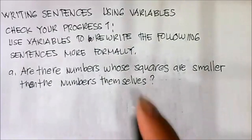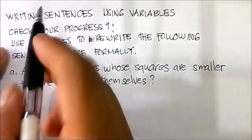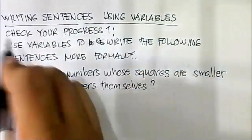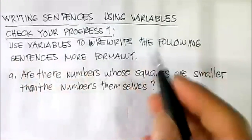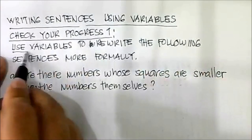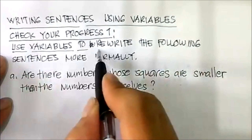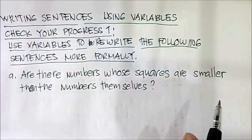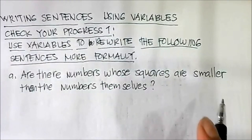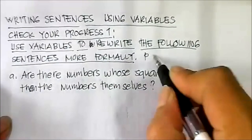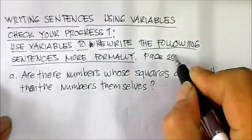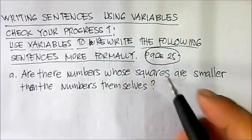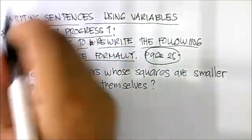The next topic is writing sentences using variables. This is Check Your Progress 1 on page 25 of your module. Use variables to rewrite the following sentences more formally.